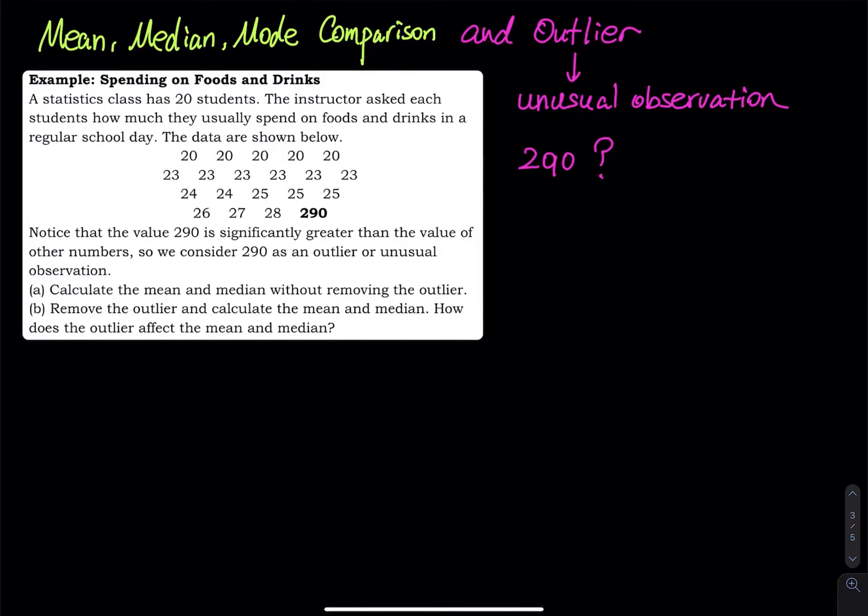But is this true? Let's find out. So what we're going to do now is I'm going to calculate the mean and the median including those 290, and then I will remove it to see what will happen.